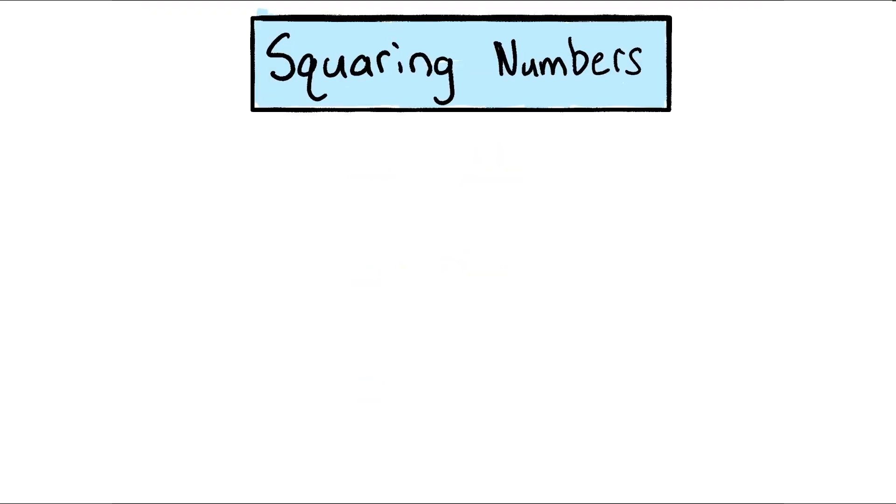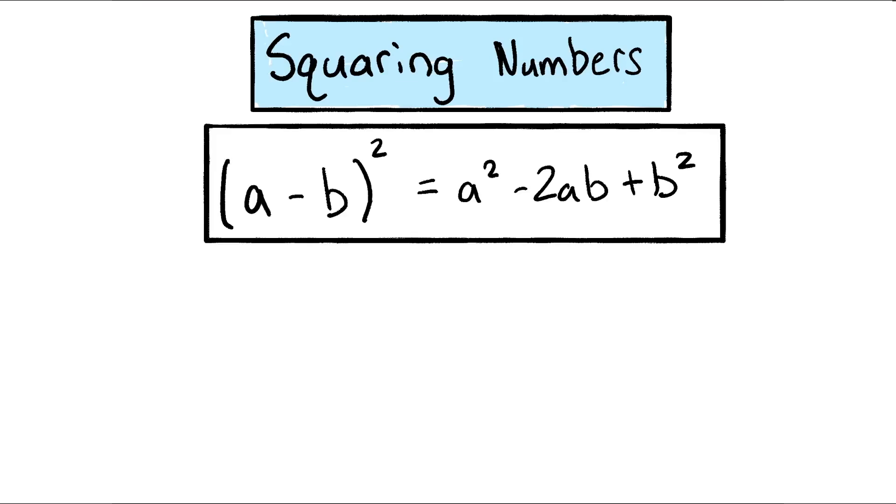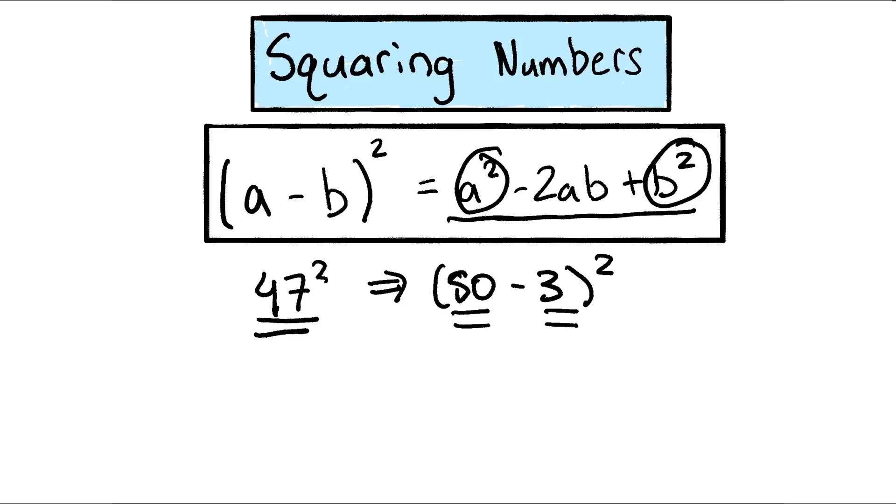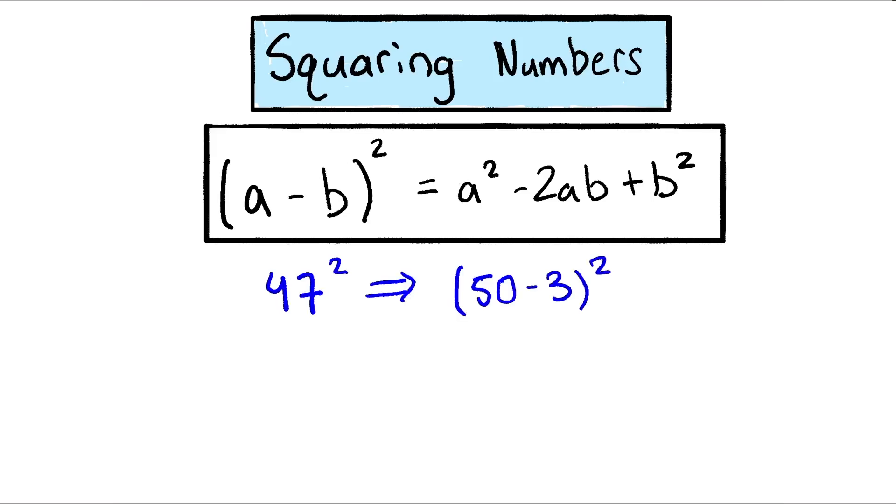Now for our next topic, we're going to teach you how to quickly square numbers in your head. So our main strategy for this is to utilize that any squared number can be broken down into the difference between any other numbers. So for example, if we wanted to find 47 squared, that's the same as 50 minus 3 squared. And if we multiply out this binomial, that gives us a squared minus 2ab plus b squared. Oftentimes, these squared terms, we can figure out a lot more easily than just trying to square 47 on its own. Because it's a lot easier to figure out the square of 50 and the square of 3 than it is to figure out the square of 47.